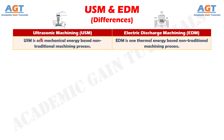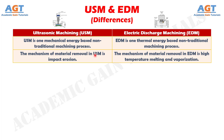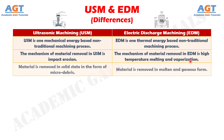Difference number 1: Ultrasonic machining is a mechanical energy-based non-traditional machining process, whereas electric discharge machining is a thermal energy-based non-traditional machining process. Difference number 2: The mechanism of material removal in ultrasonic machining is impact erosion, whereas the mechanism of material removal in electric discharge machining is high temperature melting and vaporization.